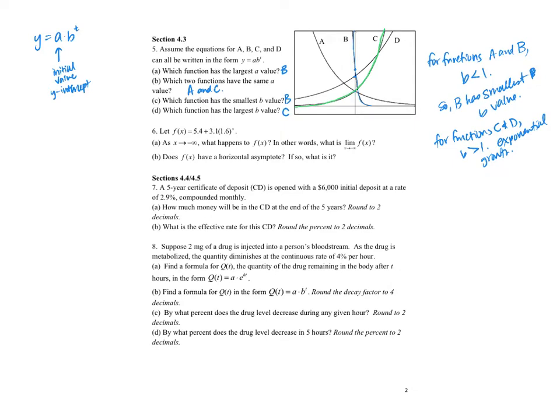Number 6. Let f(x) equal that. The question is, as x goes to negative infinity, what happens to f(x)? In other words, what is the limit as x goes to negative infinity of f(x)? If I look at this function and I graph it, that might help us to see what's going on here. I can see that my function is this exponential function, but it has this vertical shift at 5.4.